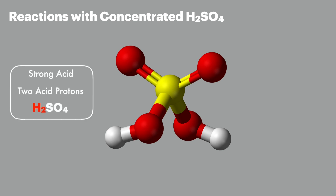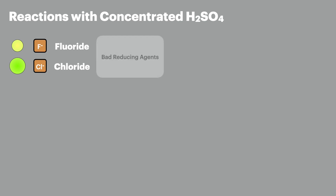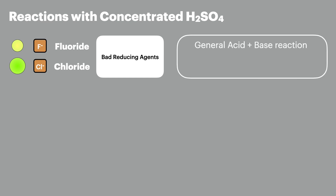Sulfuric acid is a strong acid with two acidic protons, so we call it diprotic. It also contains sulfur in the oxidation state of plus six, and this is really important as it's going to influence how it reacts with our halides. Fluoride and chloride are very small and don't easily give up their electrons, making them bad reducing agents. When they react with sulfuric acid they react in a normal acid-base reaction, where the hydrogens move from the sulfuric acid to the halide forming a hydrogen halide.